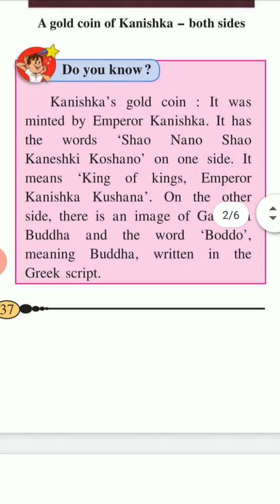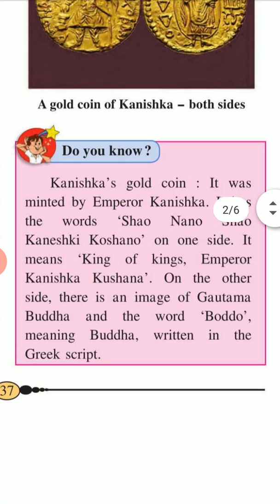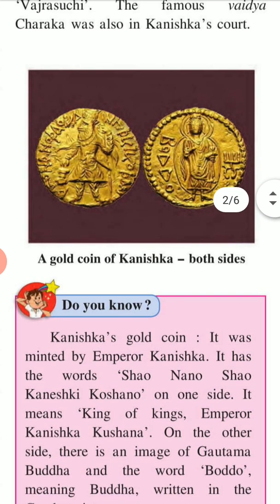The Kanishka gold coin was minted by Emperor Kanishka. It has the words 'Shahu Nano Shahs Kanishka Ki Kushano' on one side, which means 'the king of kings, Emperor Kanishka, Kushana.' On the other side, there is an image of Gautam Buddha and the word 'Buddha' written in the Greek script.